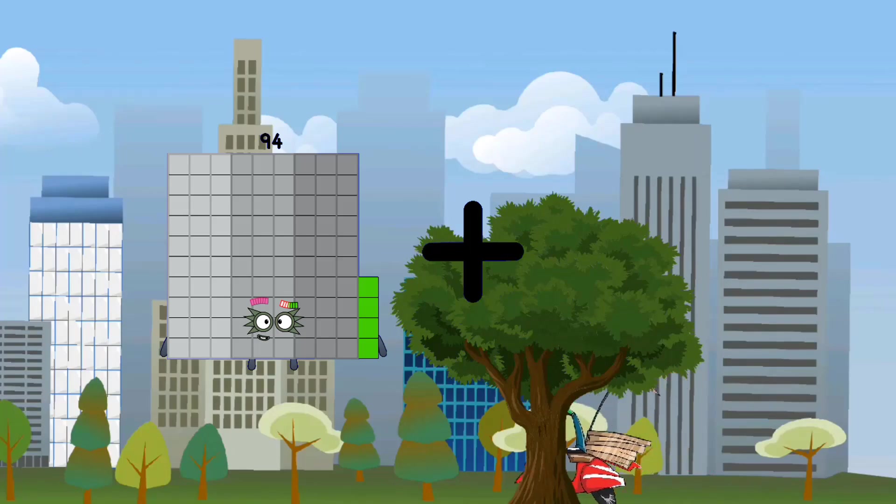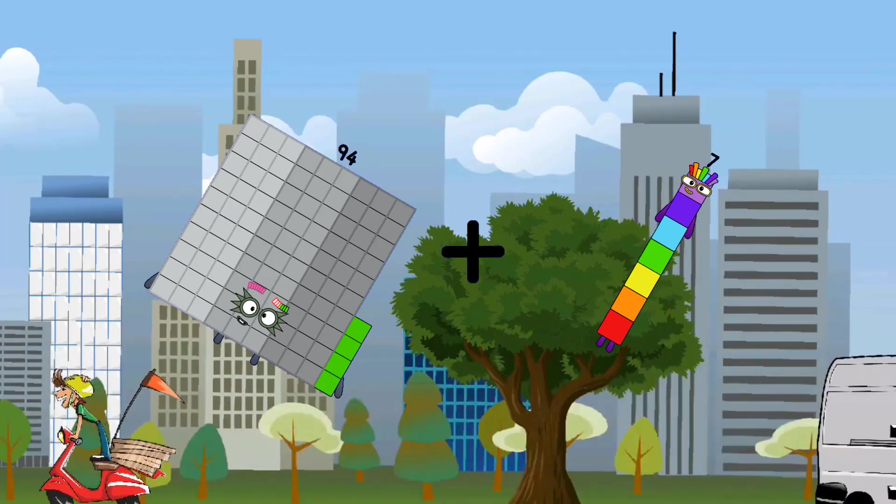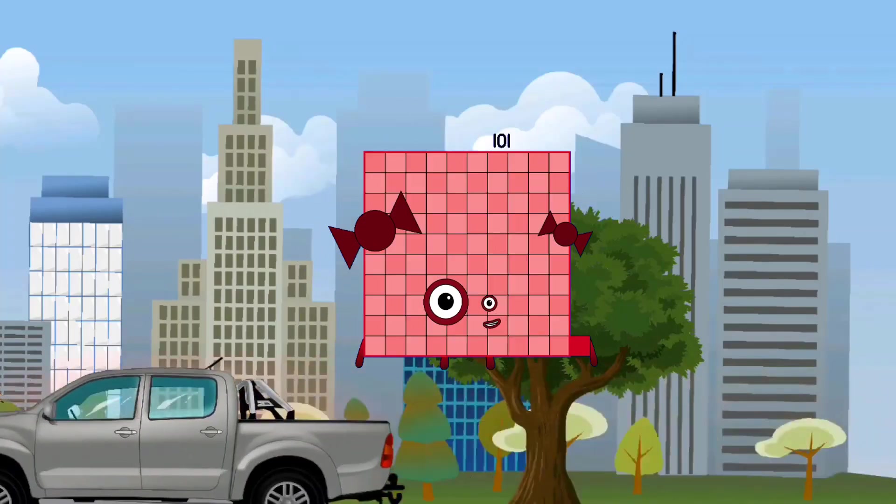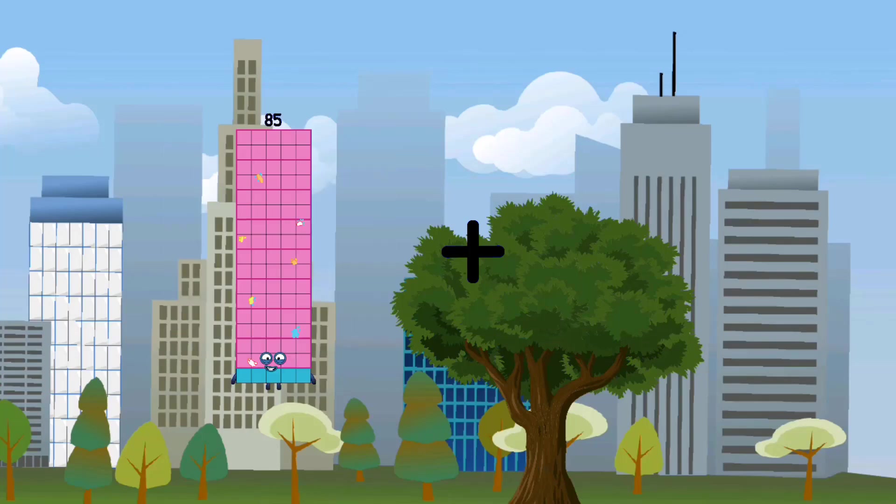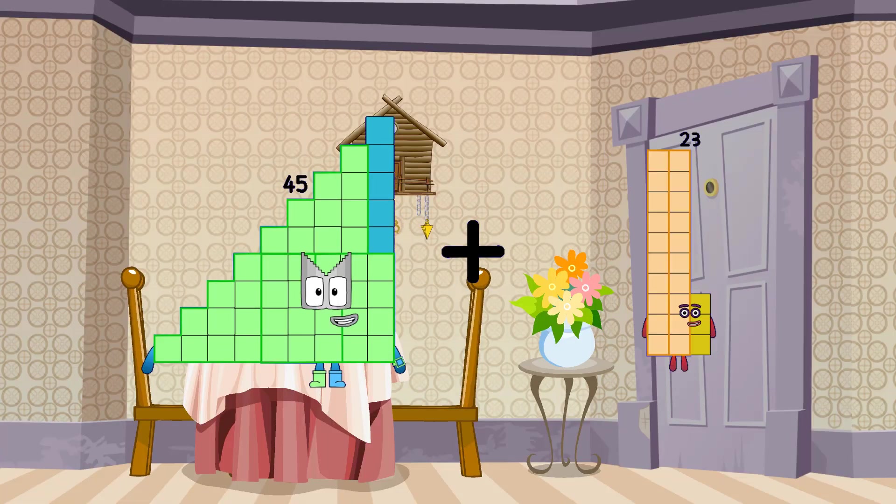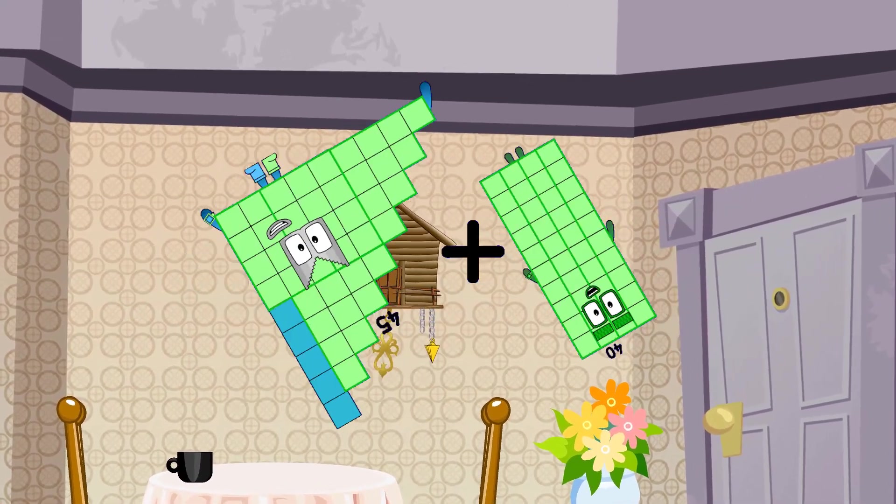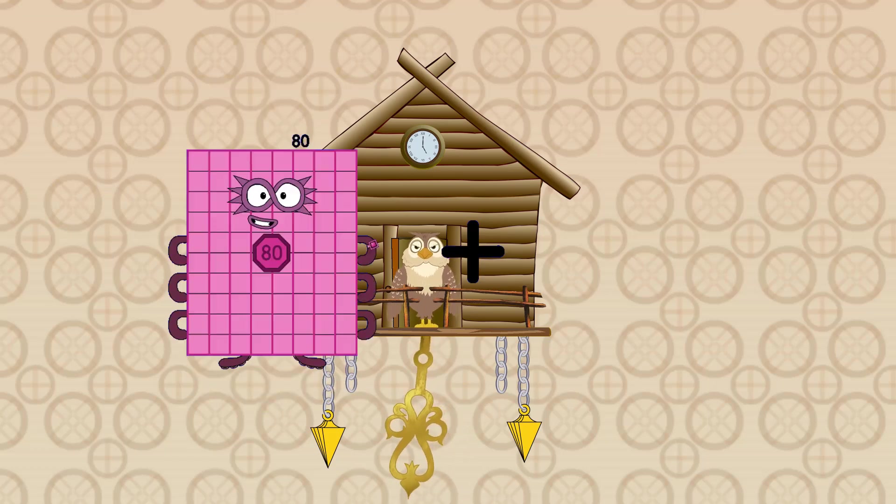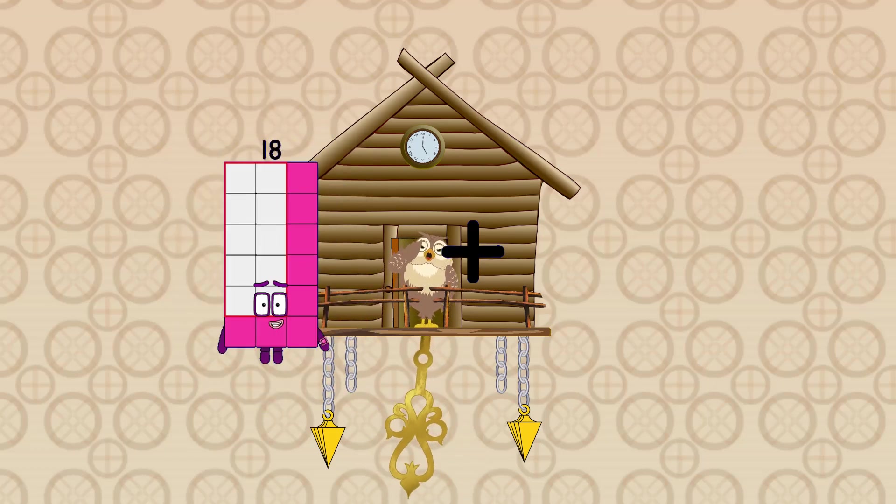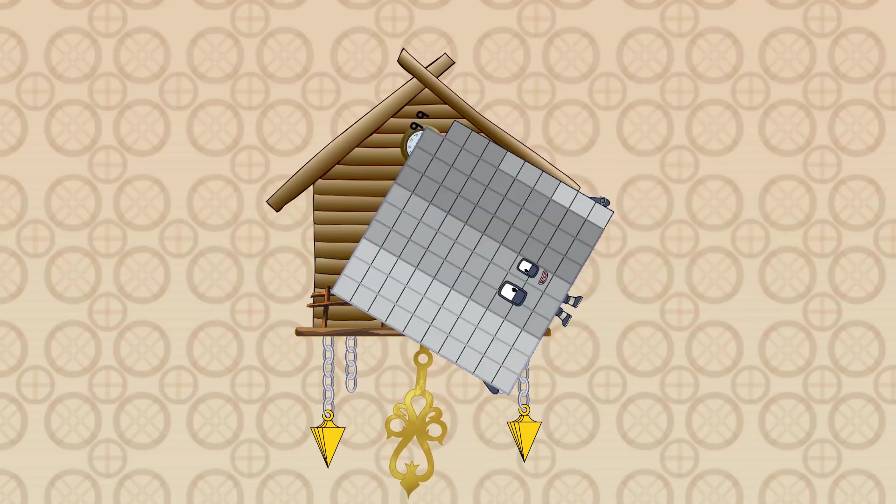94 plus 7 equals 101. 45 plus 40 equals 85. 18 plus 81 equals 99.